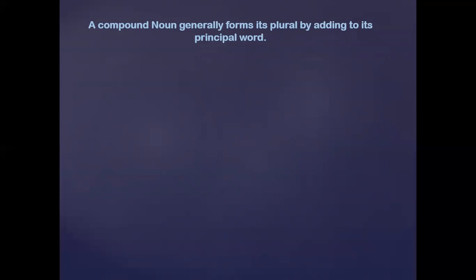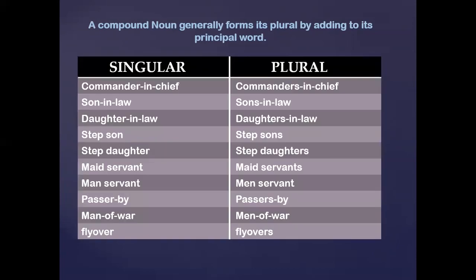When you convert a compound noun into its plural form, compound nouns generally form their plural by adding 's' to the principal word. For example, 'commander-in-chief' — the principal word is 'commander', so we add 's' to get 'commanders-in-chief'. Similarly: 'son-in-law' becomes 'sons-in-law', 'daughter-in-law' becomes 'daughters-in-law', and 'step-son' becomes 'step-sons', 'step-daughter' becomes 'step-daughters'.